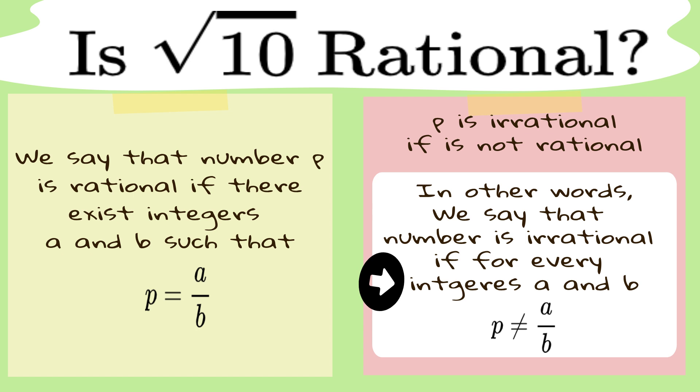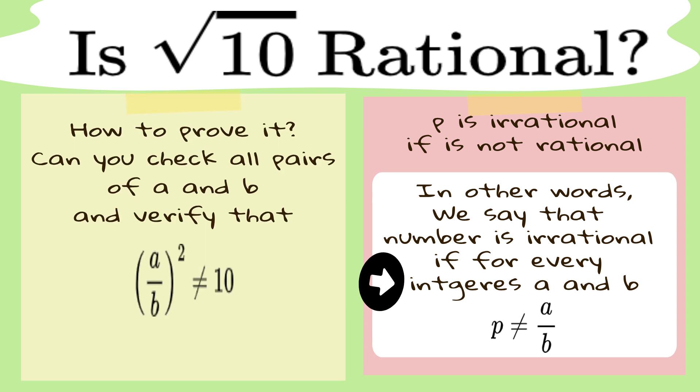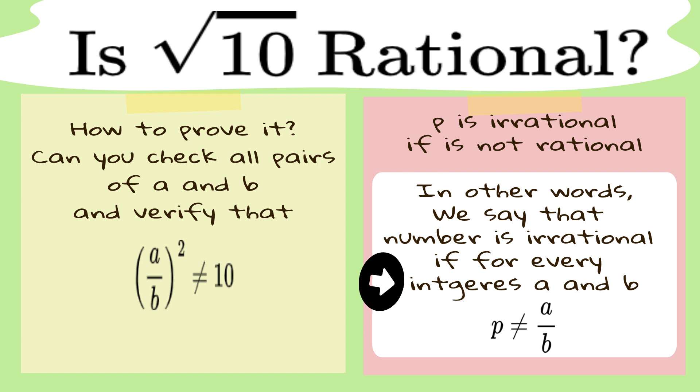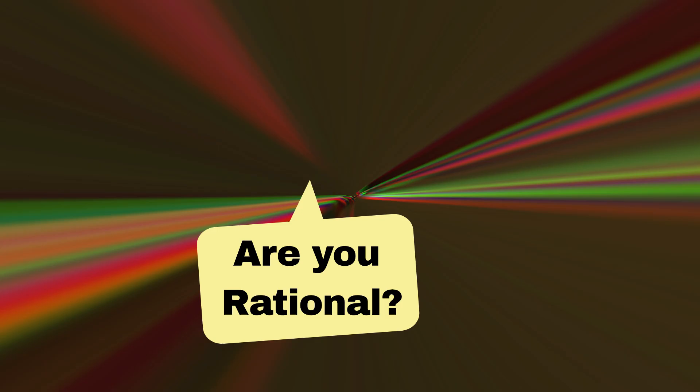If you're confident that the square root of 10 is irrational, you're absolutely right. But can you prove it? You can't just pair up integers, square them, divide them, and cross your fingers that you never hit 10. That would take literally forever. And let's be honest, you've got better things to do than chase numbers for eternity. So, let's see a smarter way.